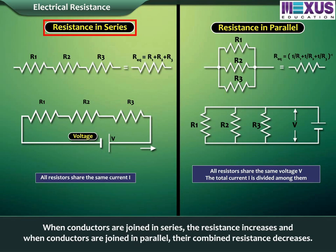When conductors are joined in series, the resistance increases. When conductors are joined in parallel, their combined resistance decreases.